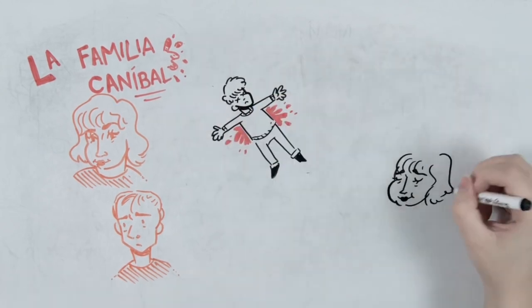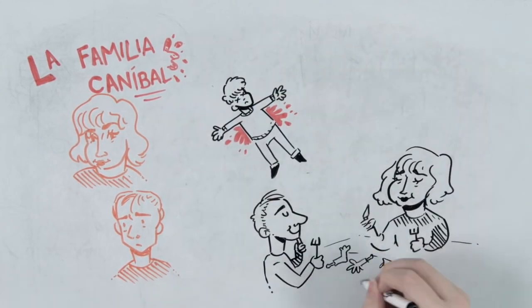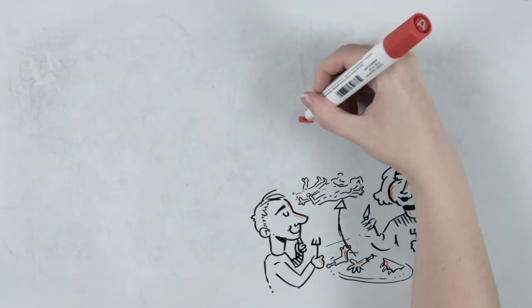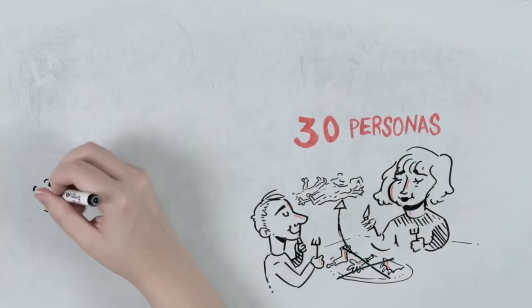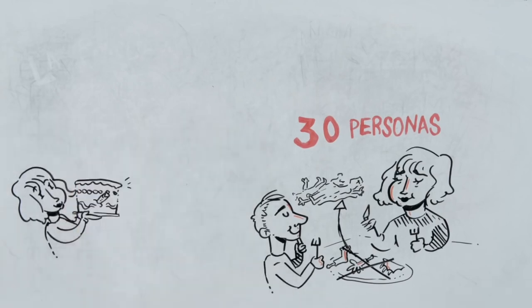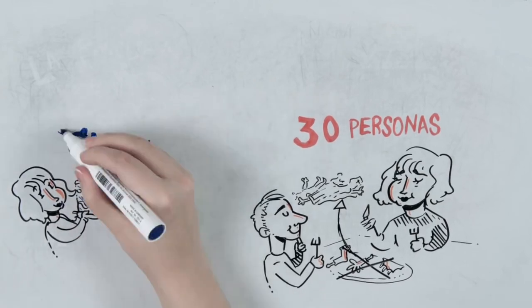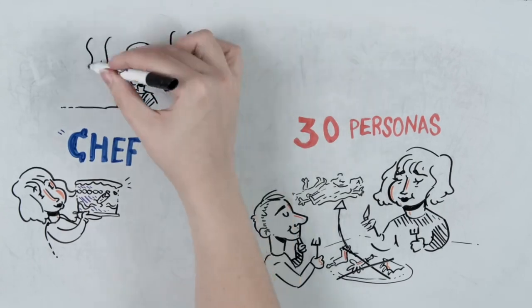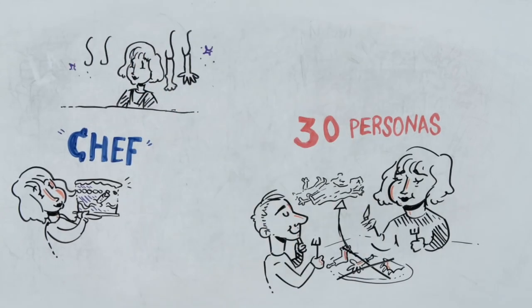It all started about 20 years ago when they began to commit murders and then eat their victims. This extends to 30 people, and they didn't eat the meat raw. They cooked it and even used it to make pastries they would later sell. Natalia even called herself a chef and later got a job as a cook. They also claimed to be a meat supplier.